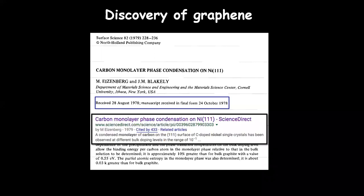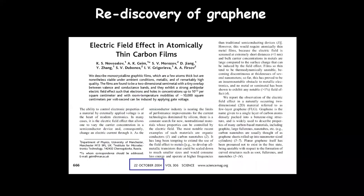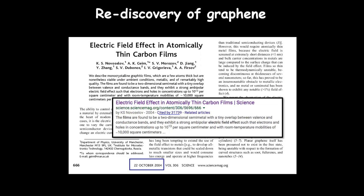Graphene was rediscovered about 25 years after that, with this paper from Novoselov and Geim, where they took bulk graphite and exfoliated it down to monolayer — or in this case a few-layer-thick films — and looked at the electric field effect in these materials. In 2004, this paper has been cited something like 40 or 50,000 times now. Even though it came 25 years later, it had a much larger impact, at least measured by citations.